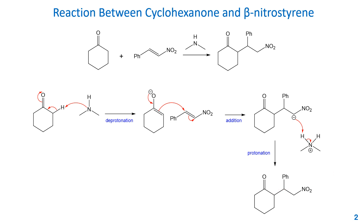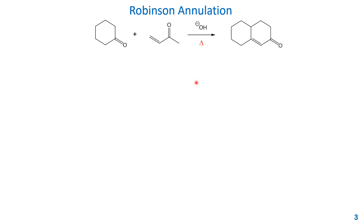This is another example of the Michael reaction. Now let's talk about the Robinson annulation. The Robinson annulation is the reaction between a cyclic ketone and an alpha-beta unsaturated ketone. This example shows methyl vinyl ketone. The base is hydroxide as a catalyst, and you need to heat it up. You will form a fused bicyclic product — an alkenone. The reaction is actually a combination of a Michael reaction and an aldol condensation.